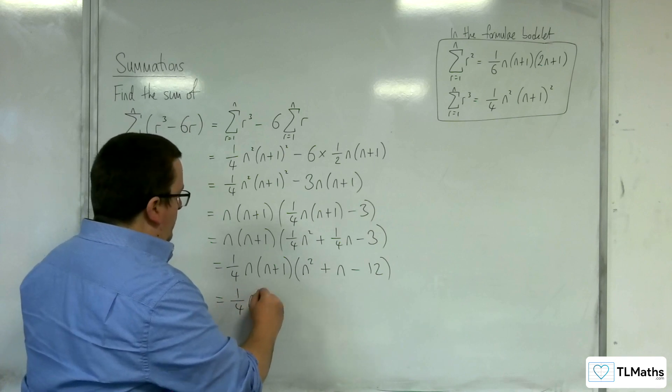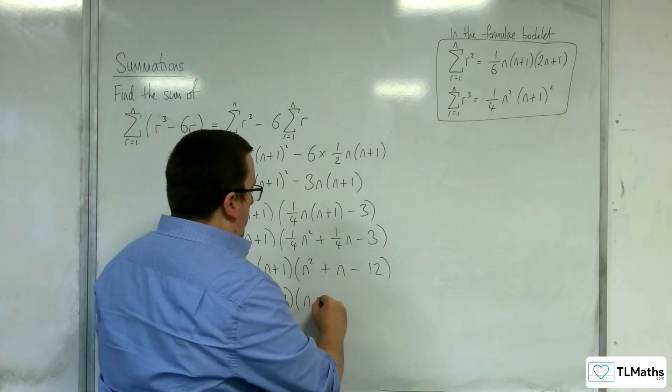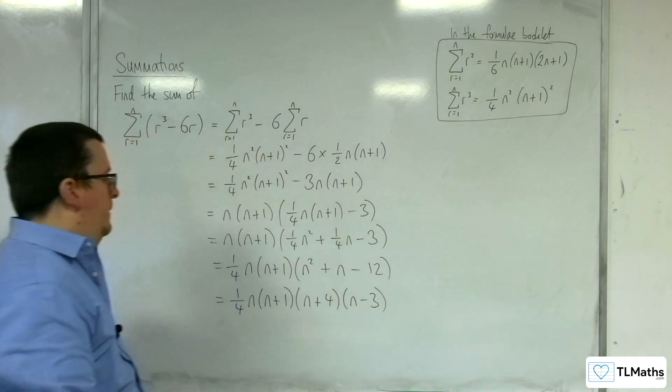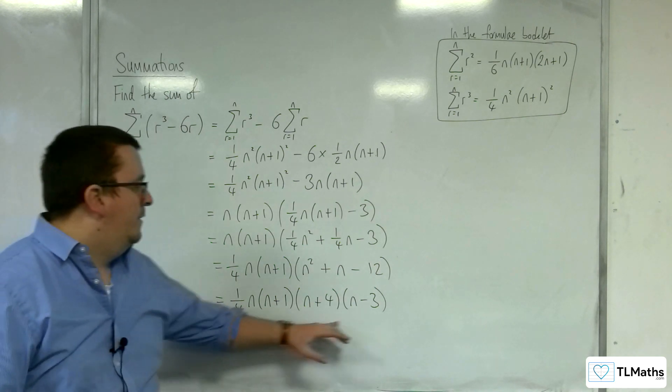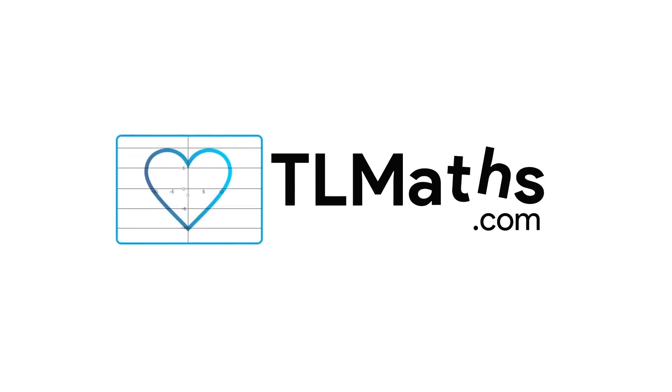So we've got 1 quarter n, n plus 1, and this would be n plus 4, n minus 3. And so we have it in fully factorised form.